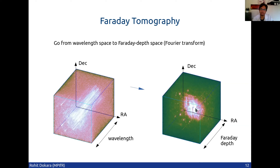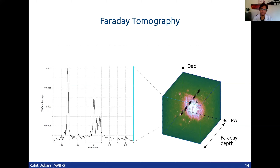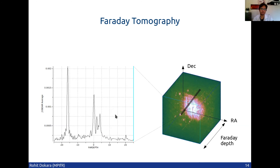So now we got this cube — what does this physically mean? We can look at one particular pixel, look through the line of sight, and extract a spectrum. What this tells us is that there is one source emitting polarized emission with a Faraday depth of about minus 16, and there are some other sources around zero radians per meter squared. If there is a single source, you'll only see a single peak, but if there are multiple Faraday rotating sources, then you'll see multiple peaks.